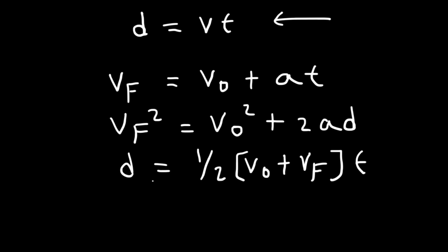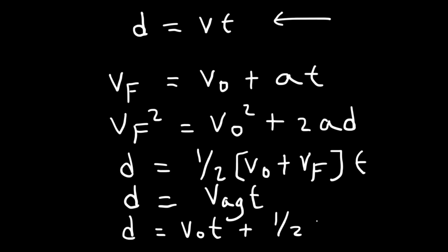We can rewrite this equation as displacement equals V_average times t, where V_average is (V_initial + V_final) / 2. There's another important equation you need to know: D equals V_initial·t plus ½·a·t².